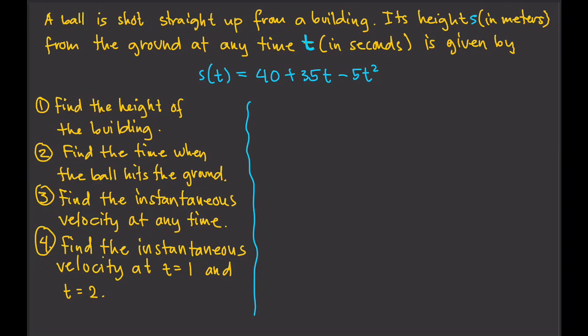A ball is shot straight up from a building. Its height s in meters from the ground at any given time t is given by s of t equals 40 plus 35t minus 5t squared. So s is the height in meters and t is the time in seconds.